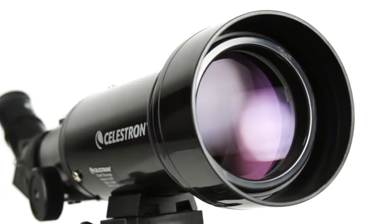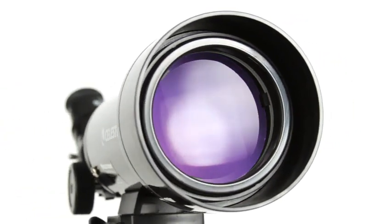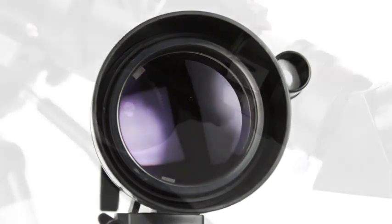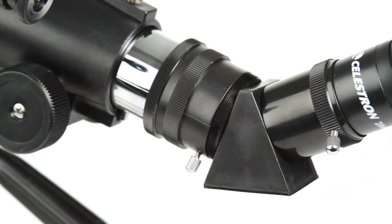That's enough light-gathering ability to view the rings of Saturn, craters on the Moon, and many more of the brightest celestial objects. An erect image diagonal corrects the orientation of your images.